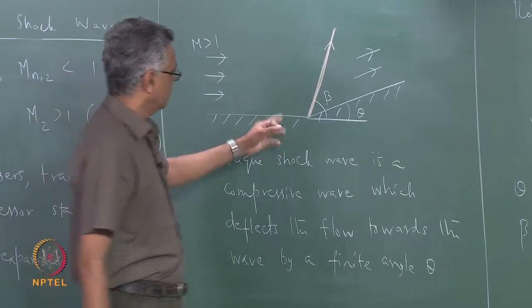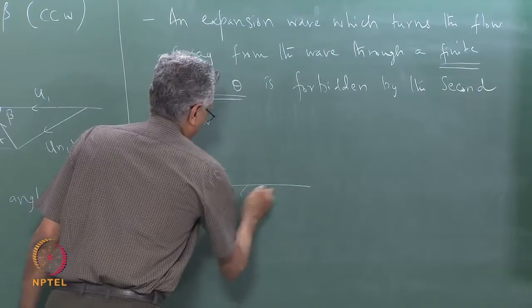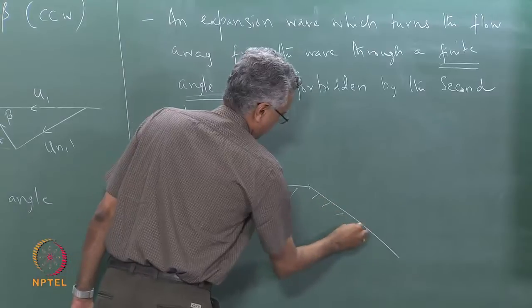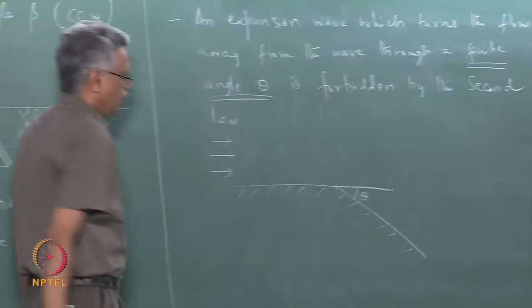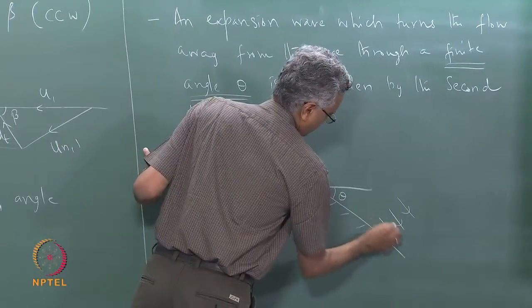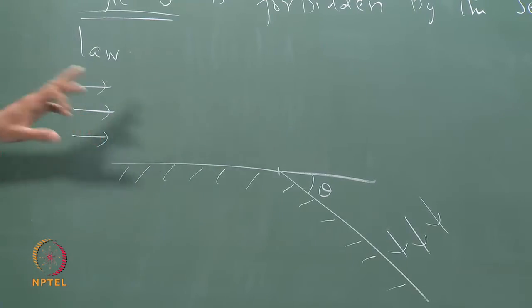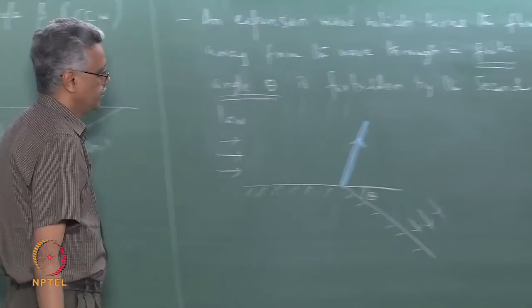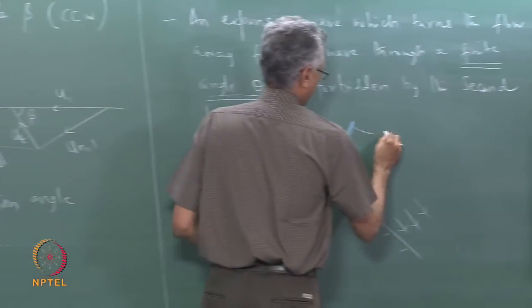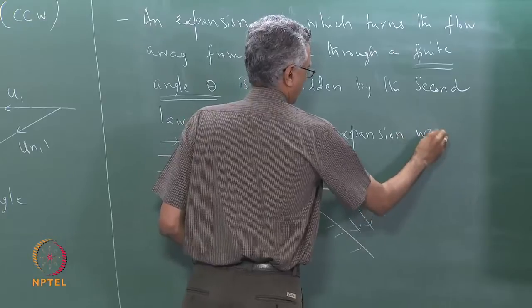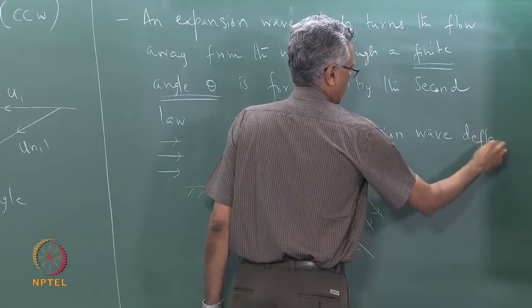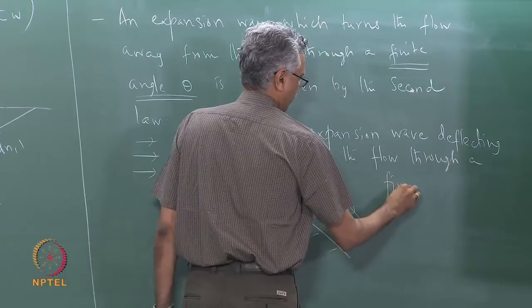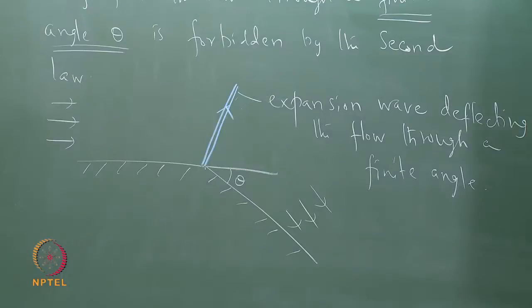The situation forbidden is the exact opposite of the oblique shock corner: if instead of a corner that deflects flow towards the wave, we have a corner that tries to deflect flow away from itself through angle theta, an expansion wave of finite strength accomplishing this is not allowed. This is an expansion wave deflecting flow through a finite angle — not allowed by the second law of thermodynamics.